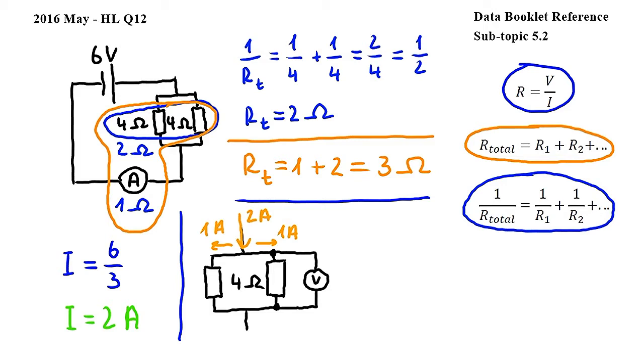The voltmeter is measuring the potential difference across the resistor on the right. To calculate the potential difference, we can use again the first equation that we see here, R equals V over I, and rearranging it, we get V equals R times I.